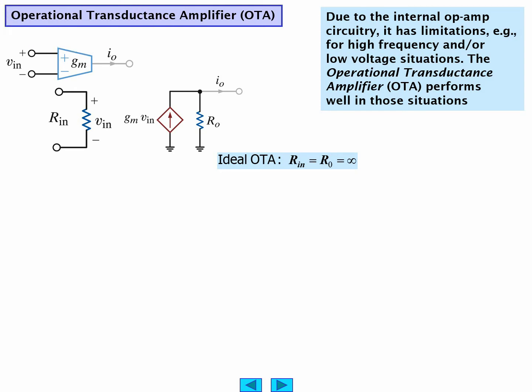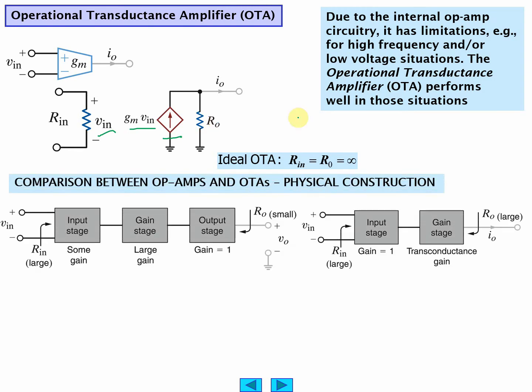We're going to talk about transconductance amplifiers now. The way these work is they take a voltage in and they give you a current out. You get a current source out. Operational amplifiers, you remember, voltage in, voltage out. In the ideal case, this resistor is infinity. There's nothing, it's an open circuit comparison between the two.